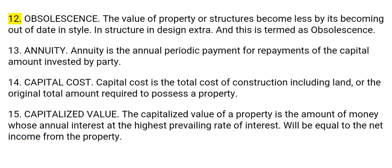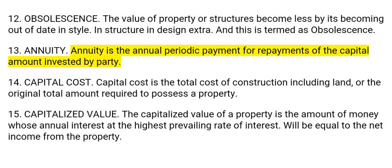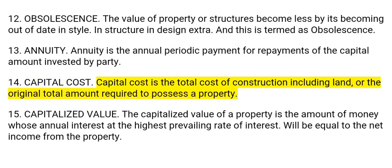12. Obsolescence: The value of property or structures becomes less by its becoming out of date in style, in structure, in design, etc. This is termed as obsolescence. 13. Annuity: Annuity is the annual periodic payment for repayment of the capital amount invested by a party. 14. Capital cost: Capital cost is the total cost of construction including land, or the original total amount required to possess a property.